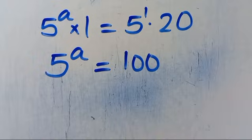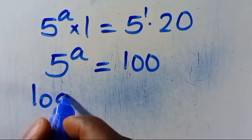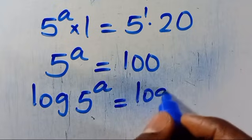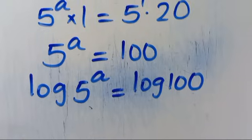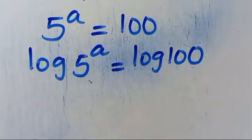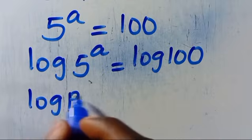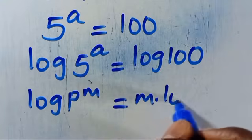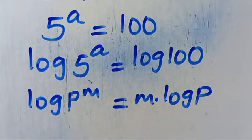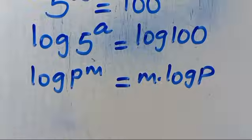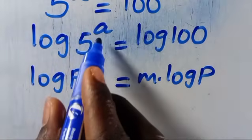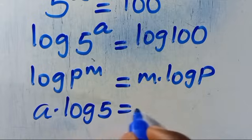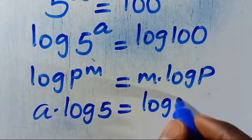Then from here let's introduce log to both sides. So we have log 5 to the power of A equals log 100. Then recall that when we have log P to the power of M, this power M will come down to be M multiplied by log P. So therefore, this power A will come down to be A multiplied by log 5 equals log 100.